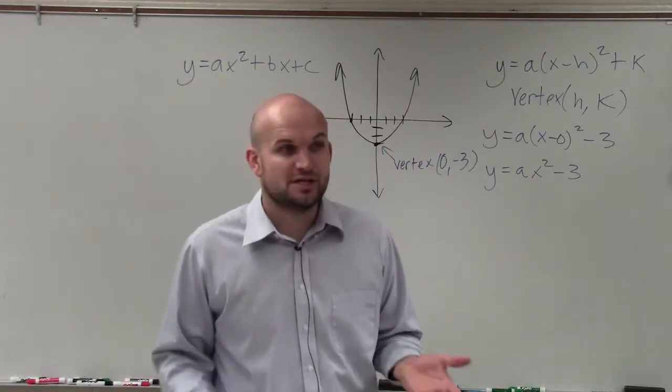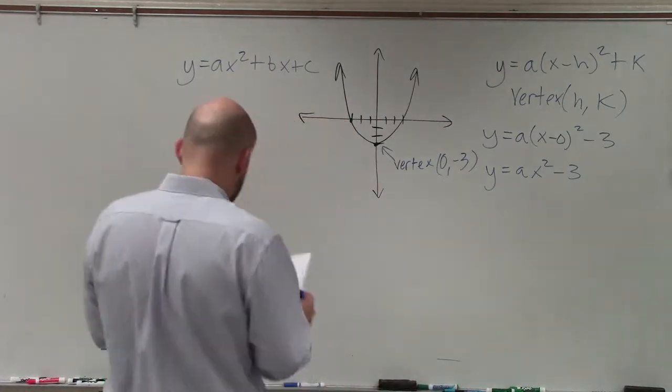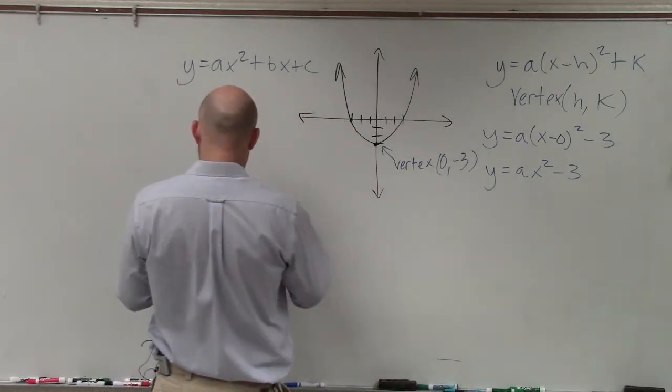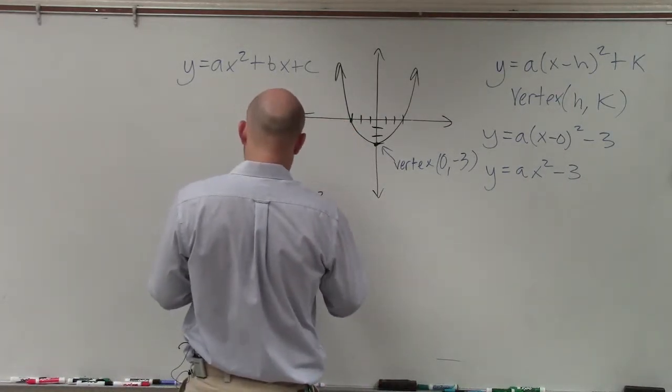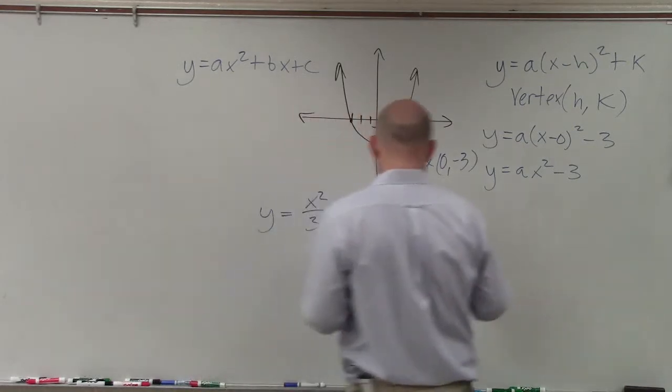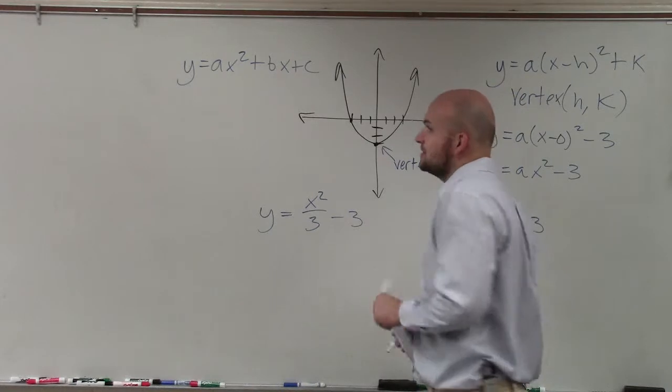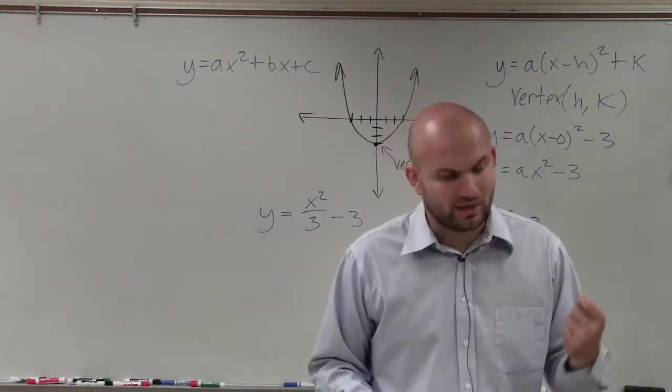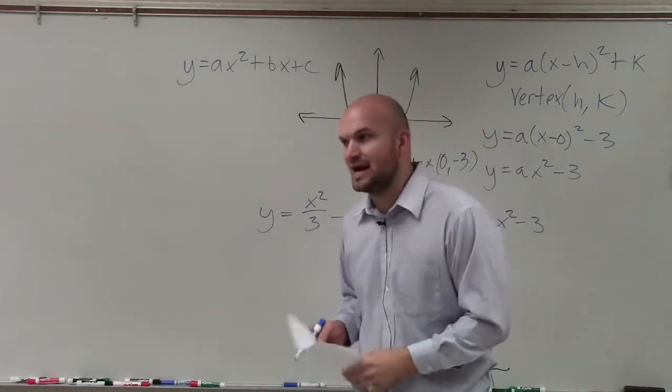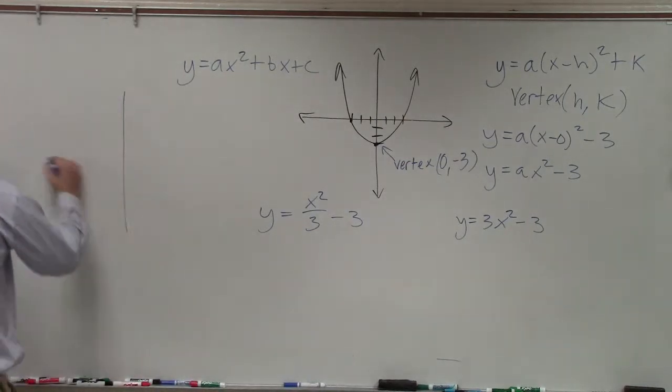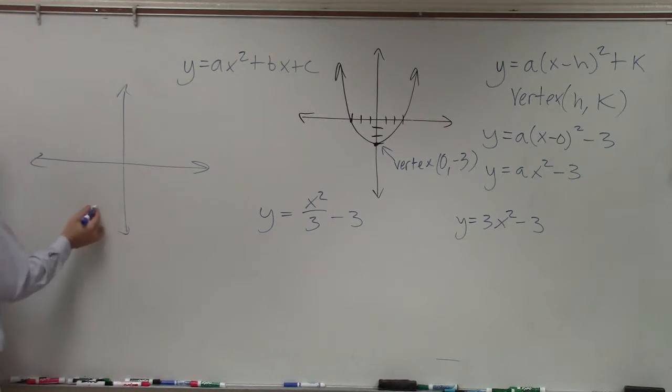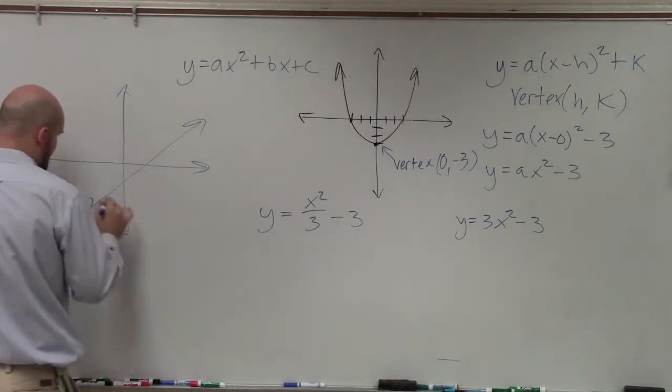Now the next thing is you determine which one is going to be correct. So I either have y equals x squared over 3 minus 3 or k, which is y equals 3x squared minus 3. So to do that, we need to look at another point and determine which parabola it lies on. So I'm going to do something very simple.